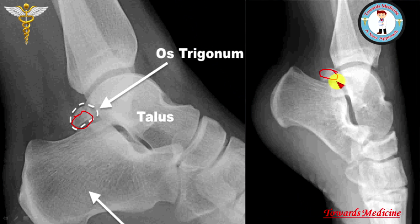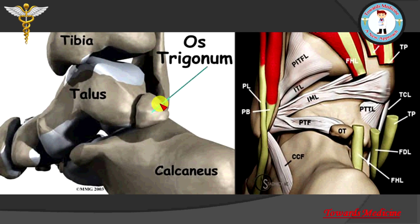But in some individuals it fails to fuse, and a small bony projection or small bony particle remains present behind the talus. This is known as Os Trigonum. You can see here a small bony particle present behind the talus — this is Os Trigonum.